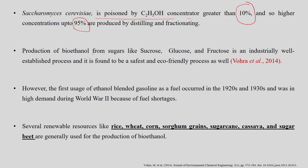Production of ethanol from sugars like sucrose, glucose, and fructose is an industrially well-established and eco-friendly technology. The first use of ethanol-blended gasoline as a fuel occurred in the 1920s and 1930s, and it was in high demand during World War II because of fuel shortage.